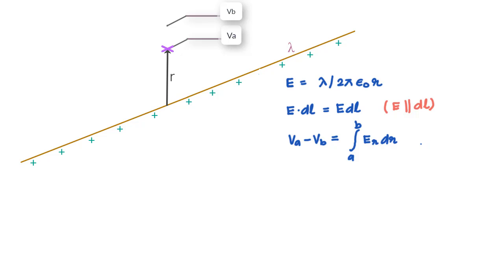And if we go ahead and put the expression for ER as lambda divided by 2 pi epsilon R and integrate between RA and RB, what we get is this.